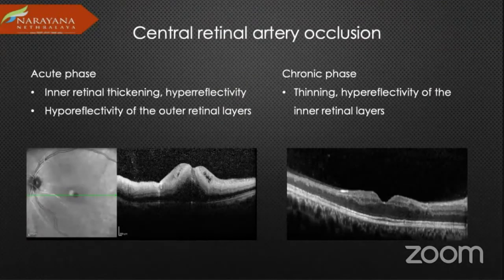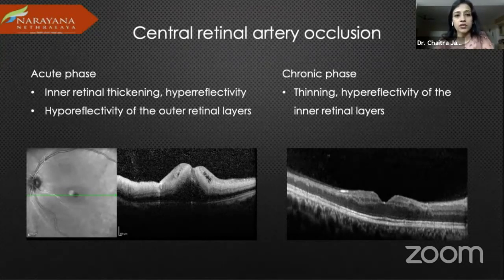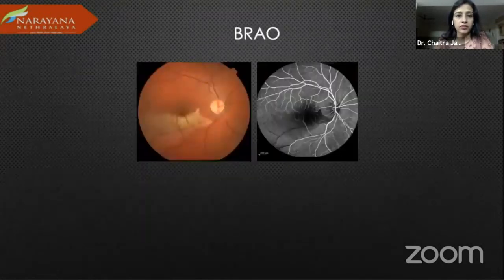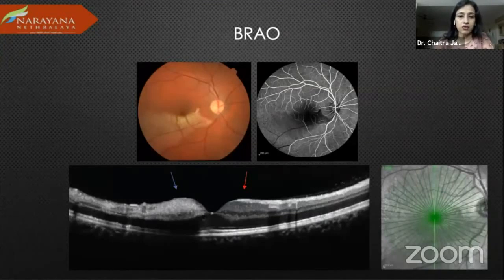For central retinal artery occlusion, both in acute and chronic phase you can see inner retinal thickening versus thinning, and you can see hyperreflectivity of the inner retinal layers. For BRAO, another example shows one half being normal whereas the other is not.